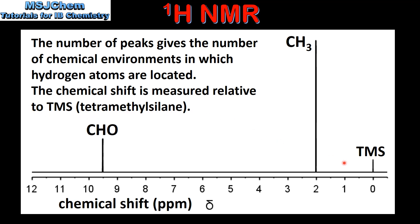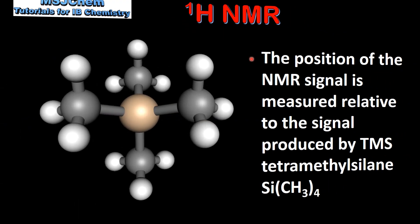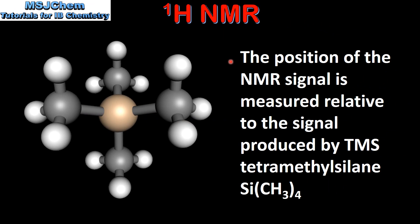We can see this peak on the right and it's assigned a value of 0 ppm. The position of the NMR signal is measured relative to the signal produced by TMS, tetramethylsilane. Tetramethylsilane is composed of a silicon atom bonded to four methyl groups.